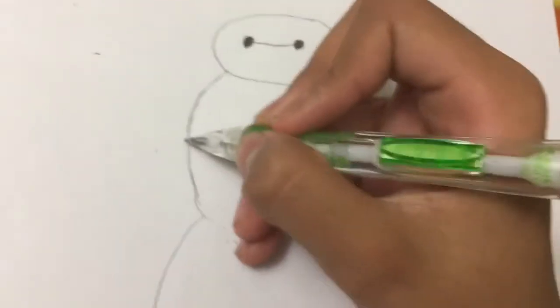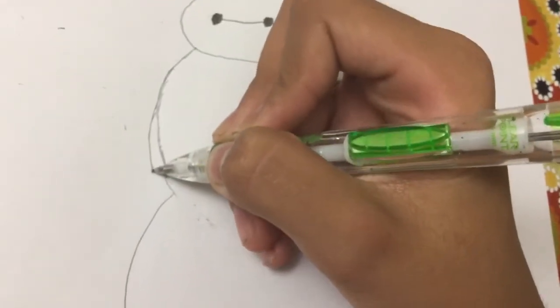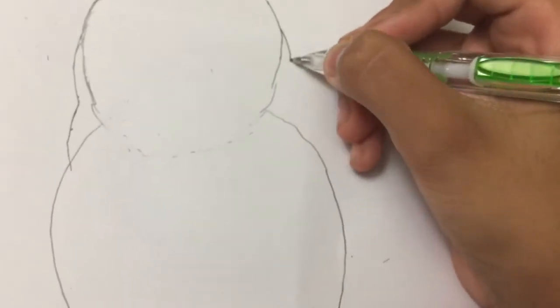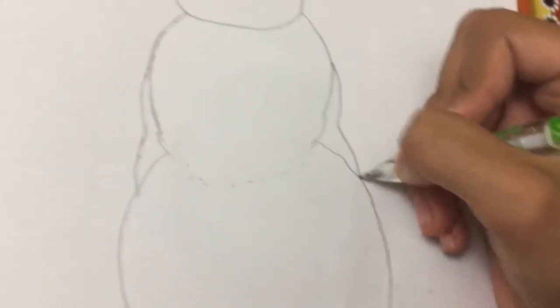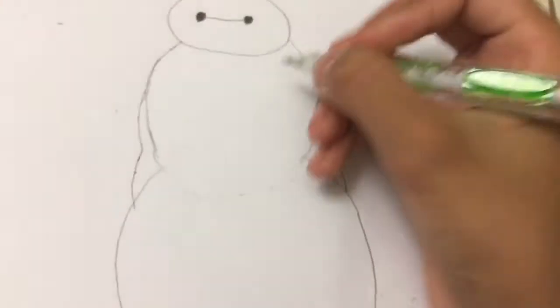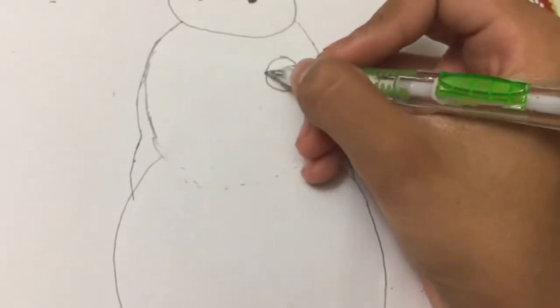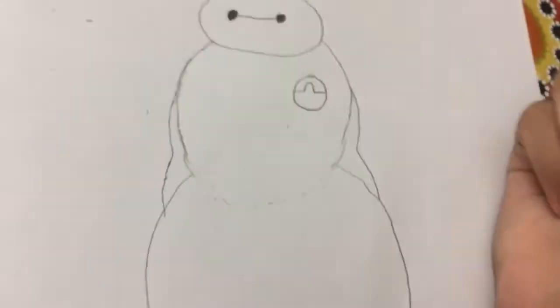Like this. And now we're going to just draw from here like this, and out, like there. And in, and out, like that. And then Baymax has this badge or sign right here, like that.